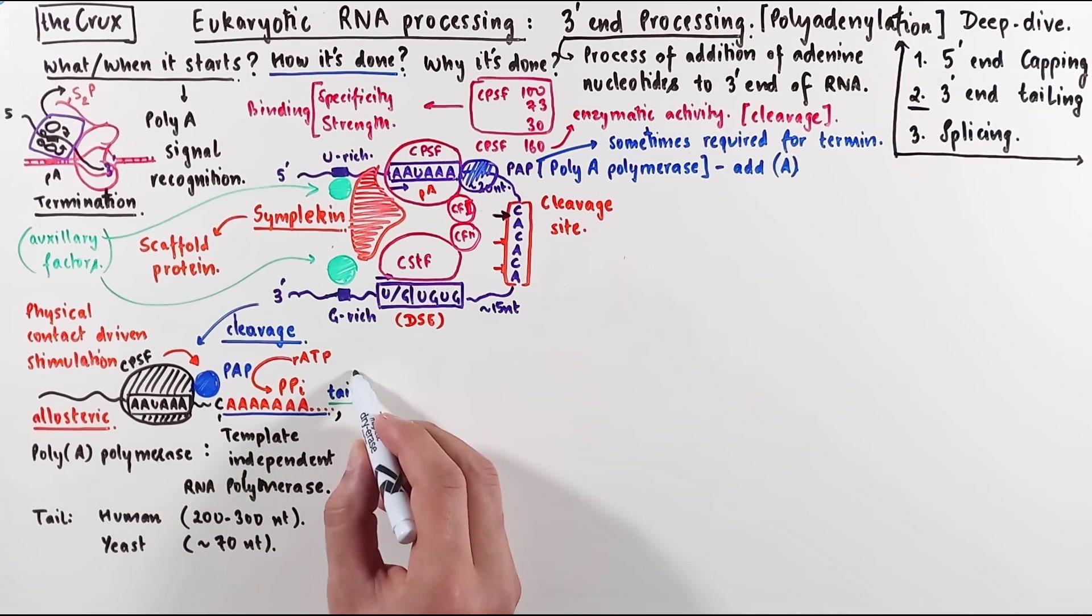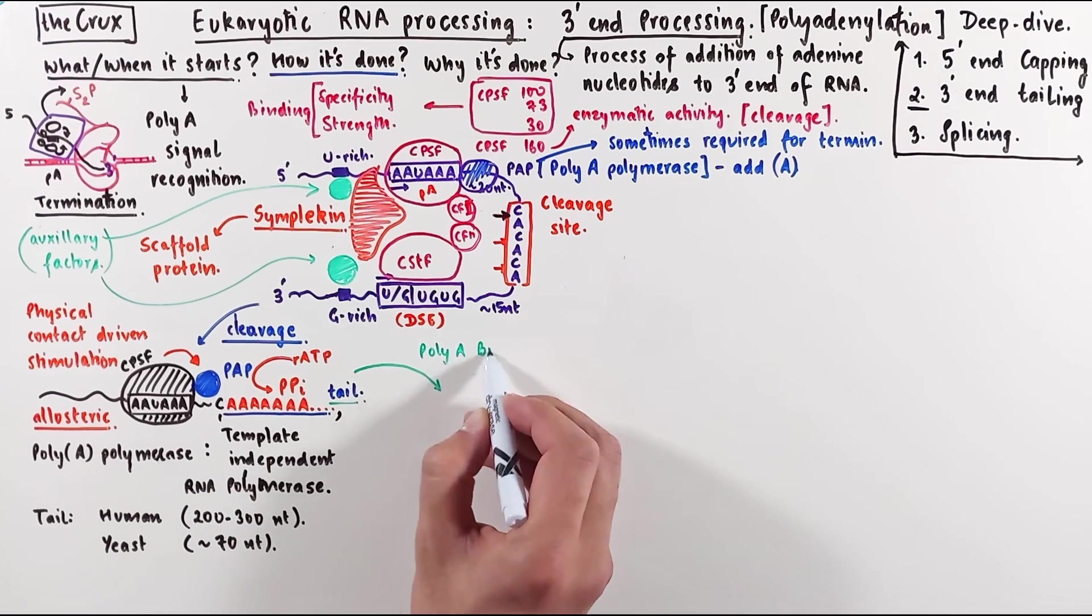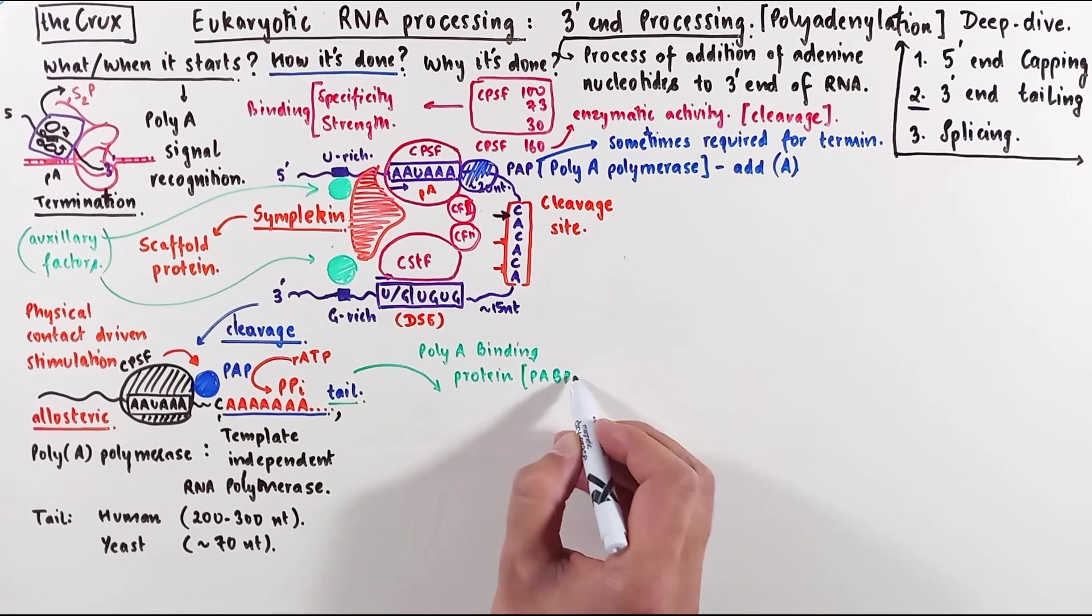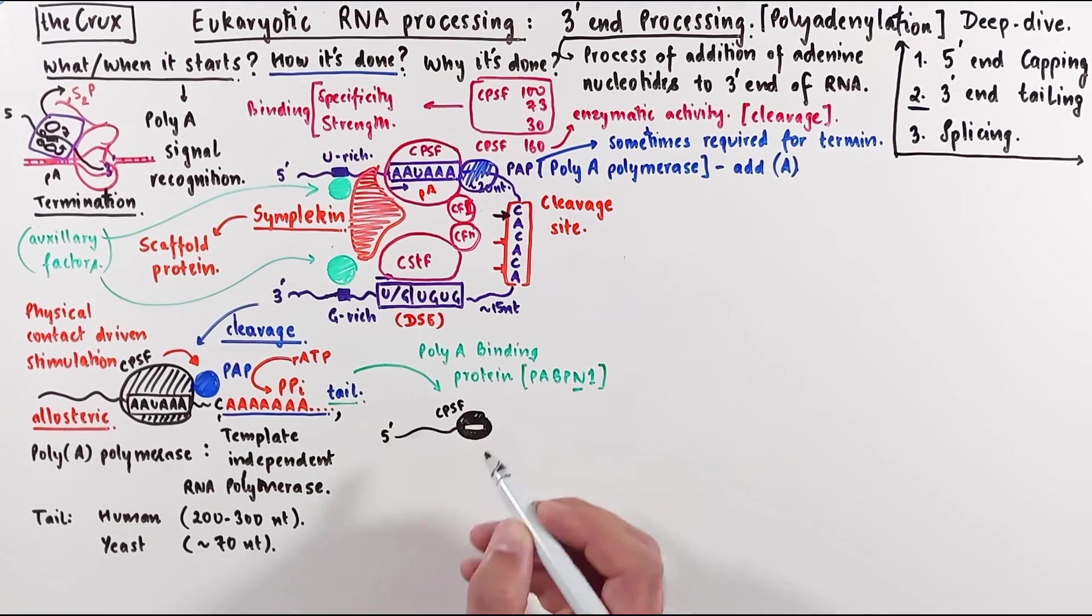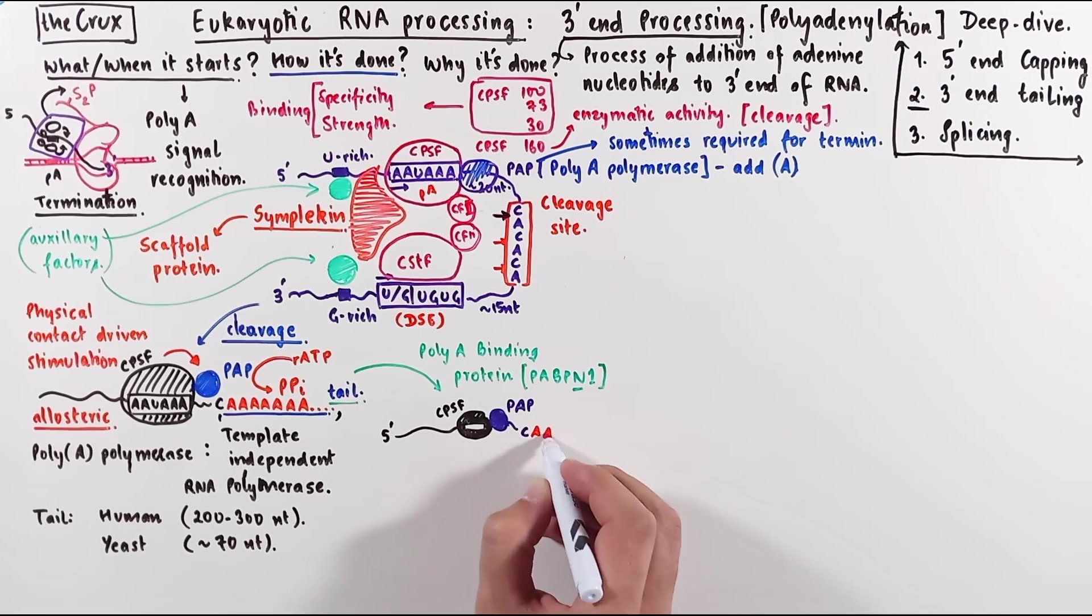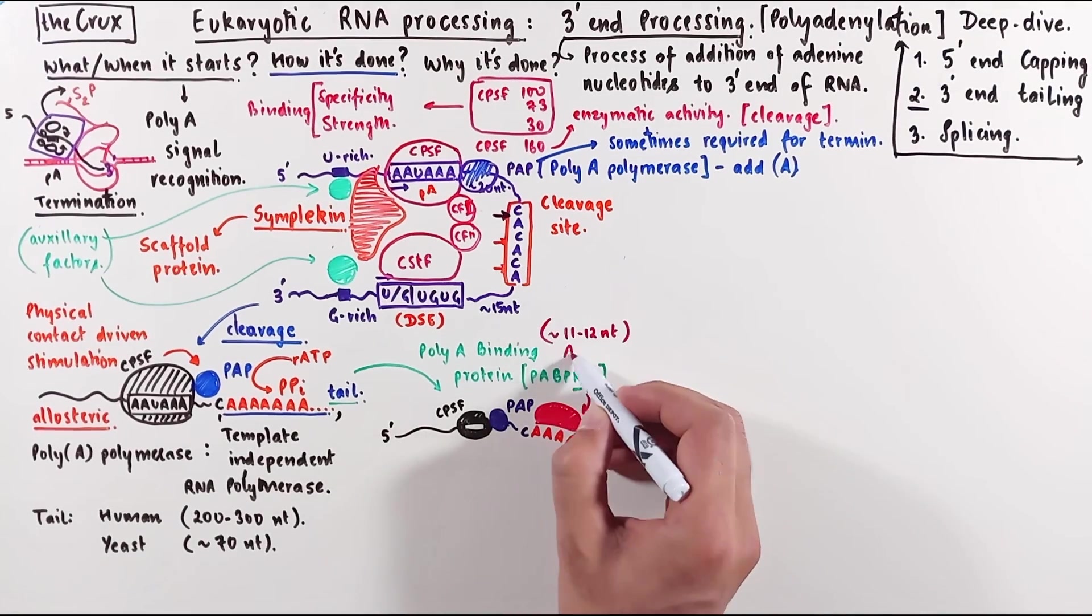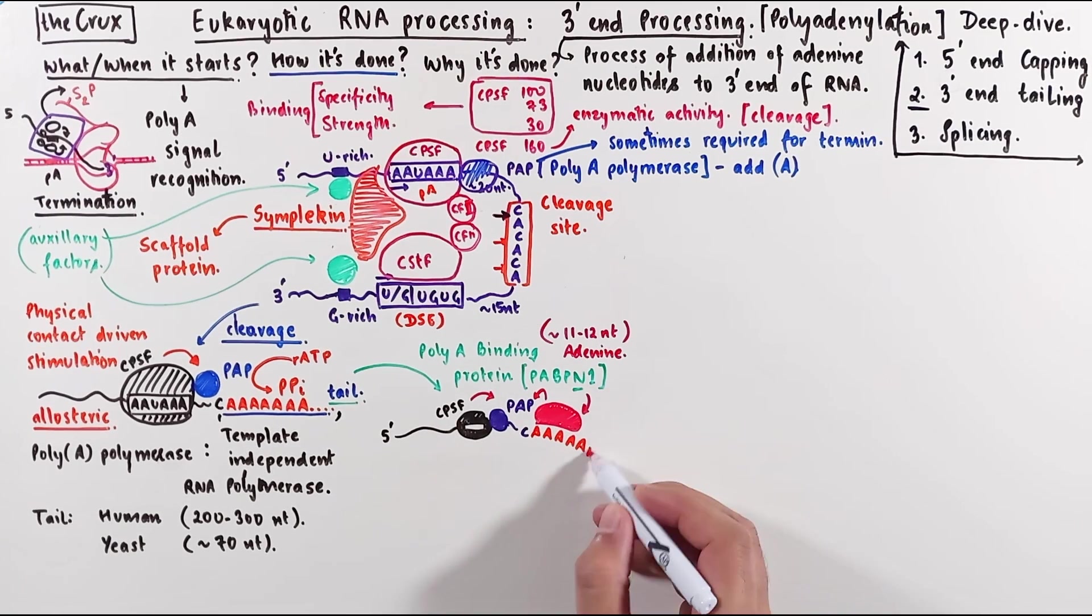Alright, so while the PAP is adding adenine to the 3' end of the RNA, a protein called polyA binding protein, PABPN1, the N stands for nuclear, this protein binds to the growing polyA tail. So let's look at the sketch of this process. As soon as the adenine is available, the PABPN1 binds, and one PABPN1 protein covers about 11 adenine nucleotides. Now the polyA binding protein also stimulates polyA polymerase activity, in addition to the stimulation from CPSF.